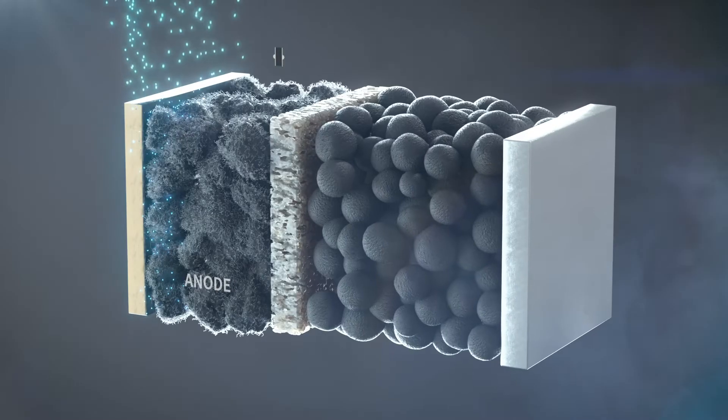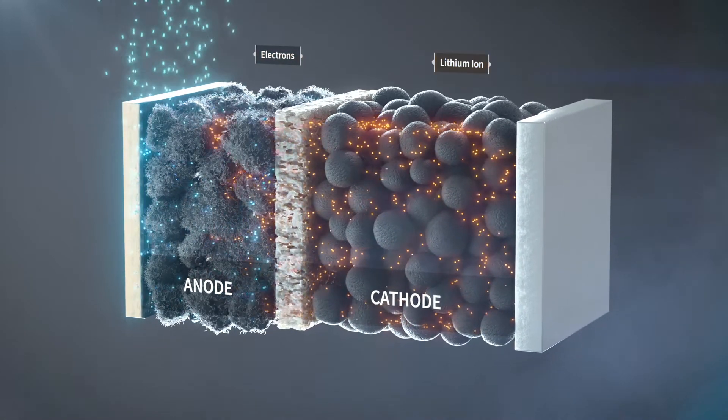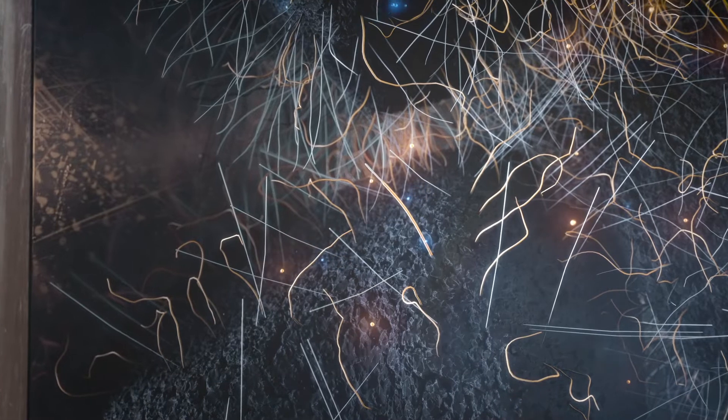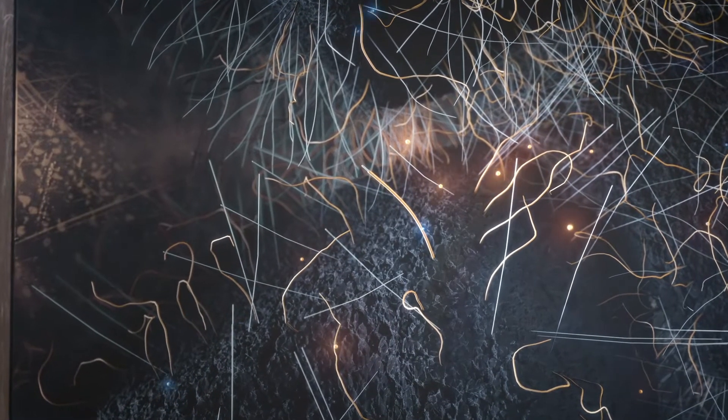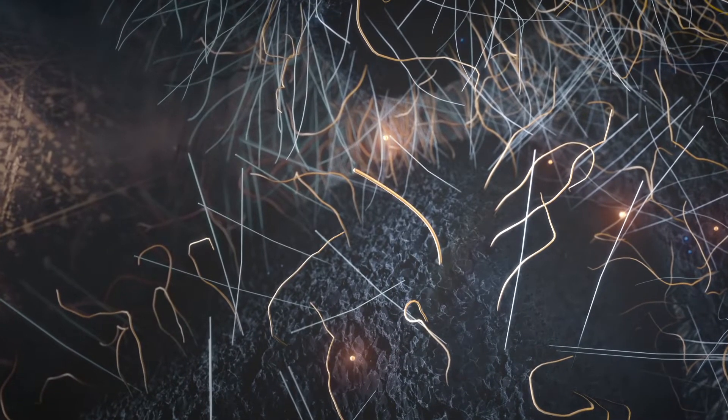During charging, electrons flow easily through the graphite into the silicon nanowires. Lithium ions flow into the nanowires, enabling fast silicon-lithium alloying, while lithium also intercalates with graphite.